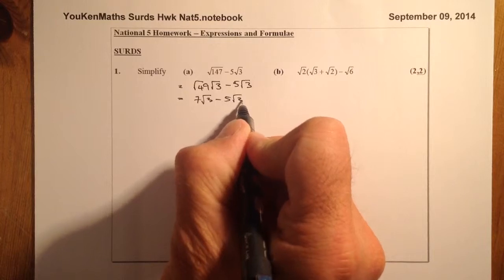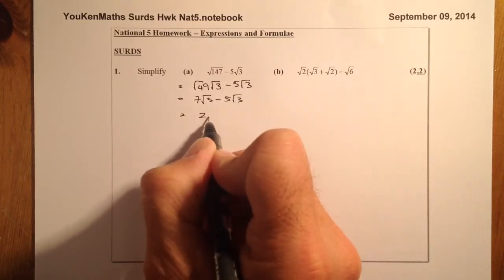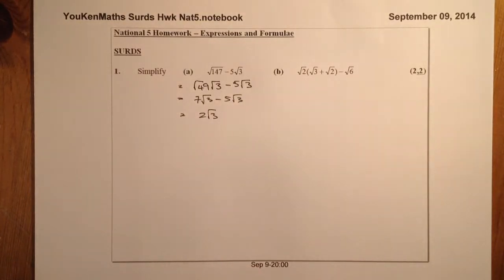And if I just subtract them, I finish up with 2 root 3. And that would be that complete. That's as simplified as far as I can go.